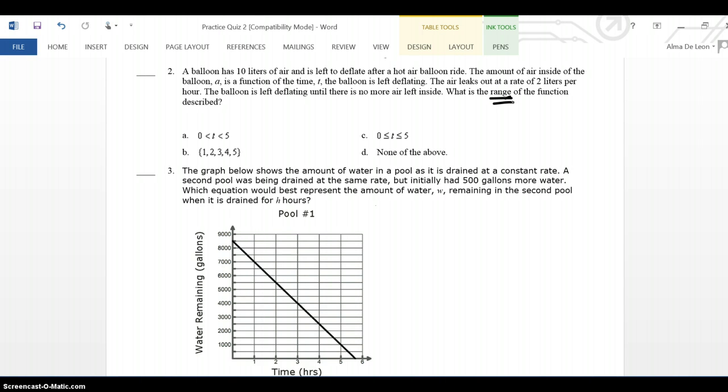Again, I'm looking for the range. In this case, I don't have an equation to go by. So, I have to formulate my own equation. I know that the balloon has 10 liters of air. And that 2 liters of air are coming out every hour because the balloon is deflating.